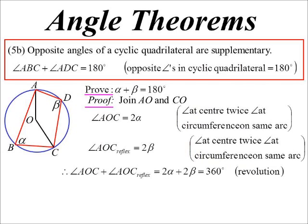So 2 beta, well we know that those two angles must add together to give 360, it's a revolution, they're going around a point. So if 2 alpha plus 2 beta is 360, 1 alpha plus 1 beta must be 180, so that's proving our cyclic quad result.